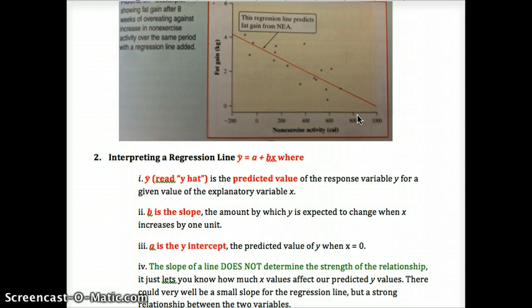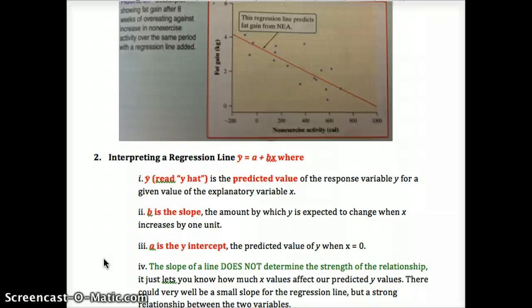The slope of the line — this is a common misconception — it does not determine the strength of the relationship. It simply tells you how much x values affect our predicted y values. We could have a weak correlation and a steep slope. So the slope just tells you about the regression line, not the strength of the relationship between the explanatory and the response variable. We could have a small slope and a strong correlation, or a weak correlation and a strong slope. Slope and correlation are not the same.